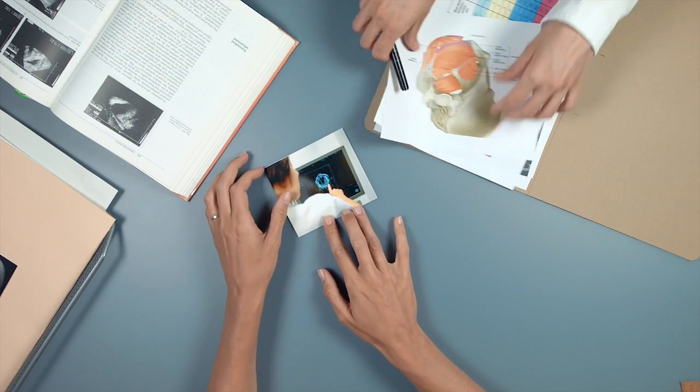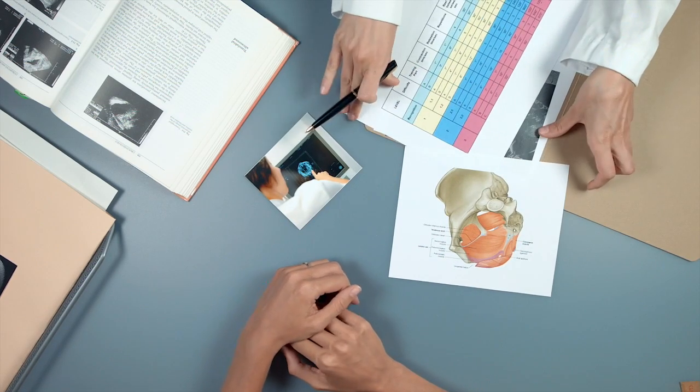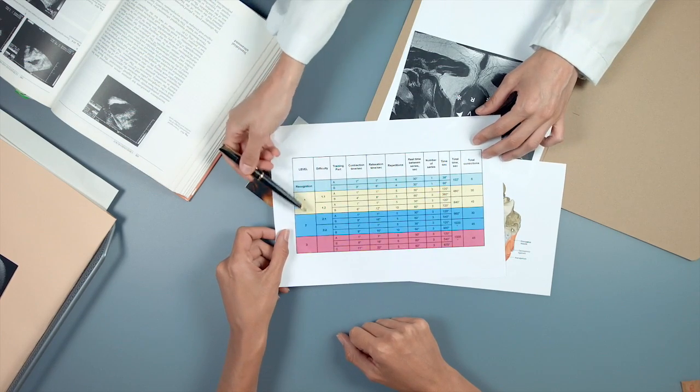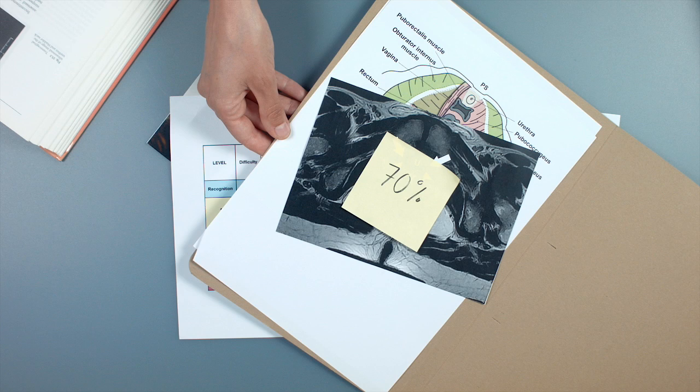One approach for initially managing urinary incontinence is pelvic floor muscle training. PFMT are exercises involving the muscles at the base of the pelvis and report a cure rate of up to 70% if the techniques are done properly.